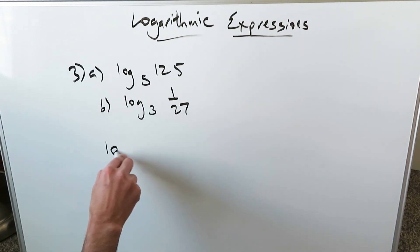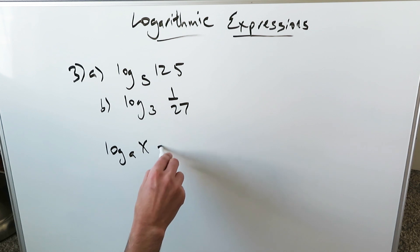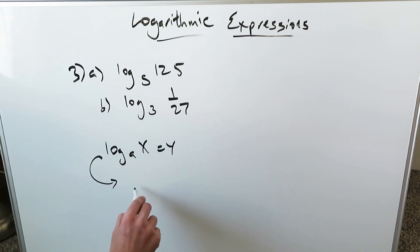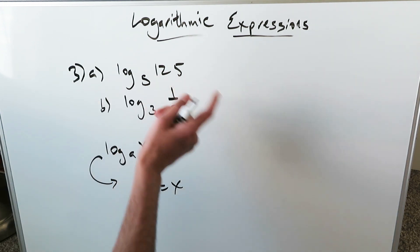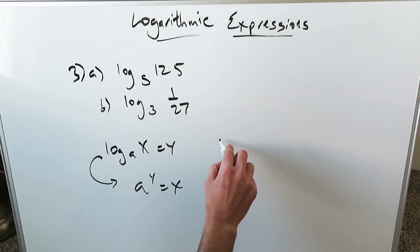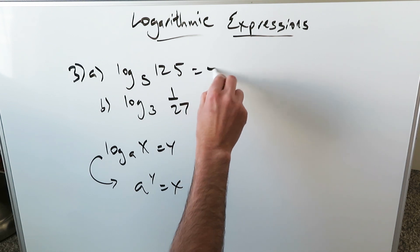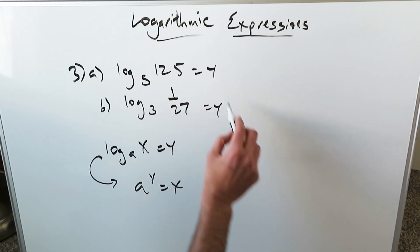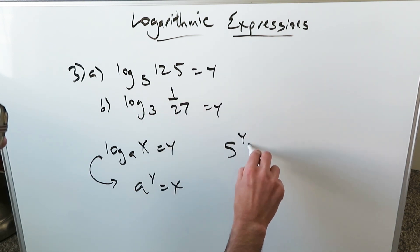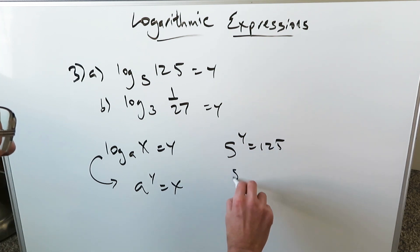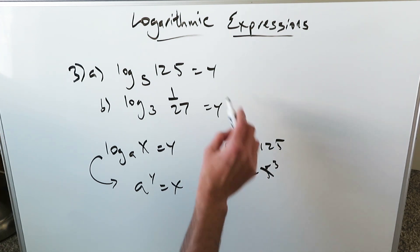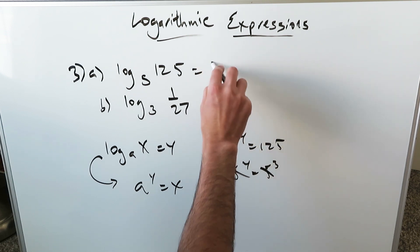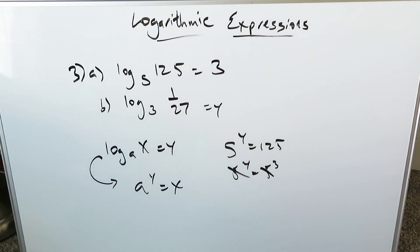When you are looking at some logarithmic form, log base A of X is equal to Y, you can convert this into an exponential as A to the Y is equal to X. That's the format you want to use for these questions. Log base 5 of 125 — convert it. This is equal to Y. 5 to the Y is equal to 125, which is equal to 5 to the exponent 3. These cancel out. Y equals 3, so the answer is 3.